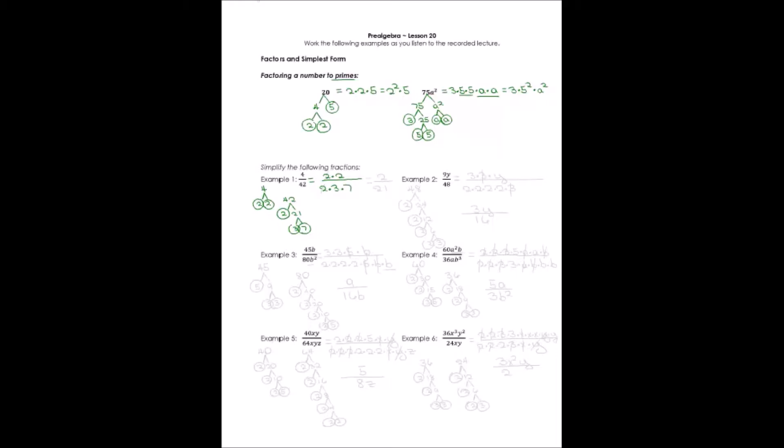I've written my fraction 4 over 42 as products of primes, and now I can cancel out. Anything over itself equals 1, so we cancel out pairs that match. I see one set of 2's that matches in my fraction, so I can cancel those — they become 1's. That's all that matches. What's left in the numerator is 2, and in the denominator, 3 times 7, or 21. The lowest form of 4 over 42 is 2 over 21.